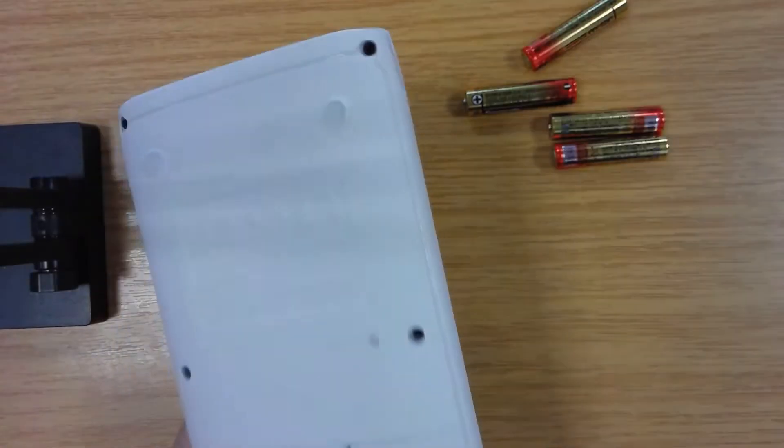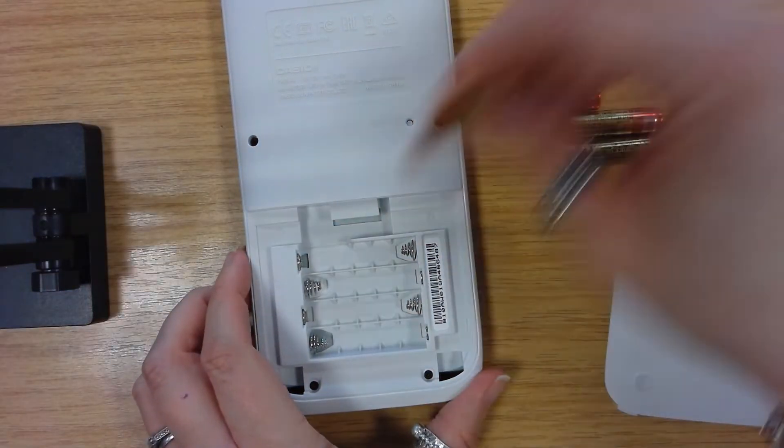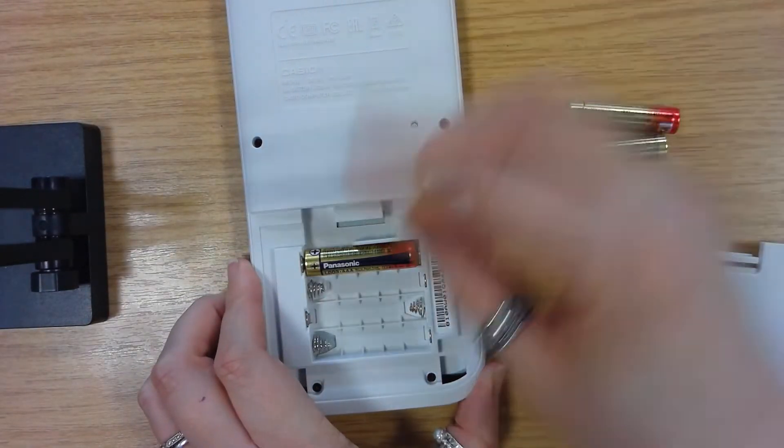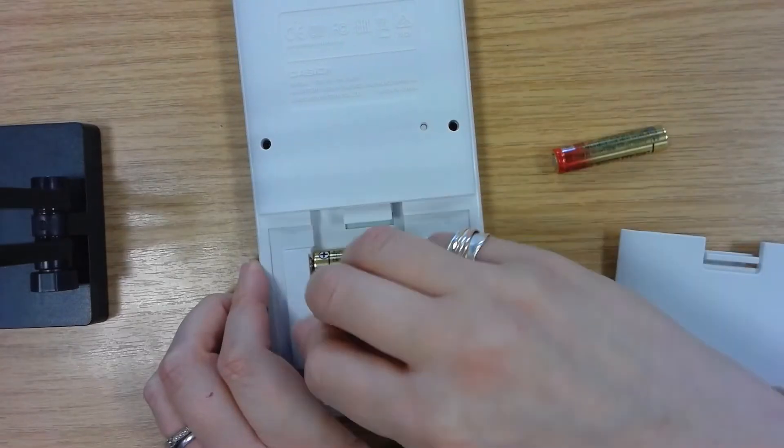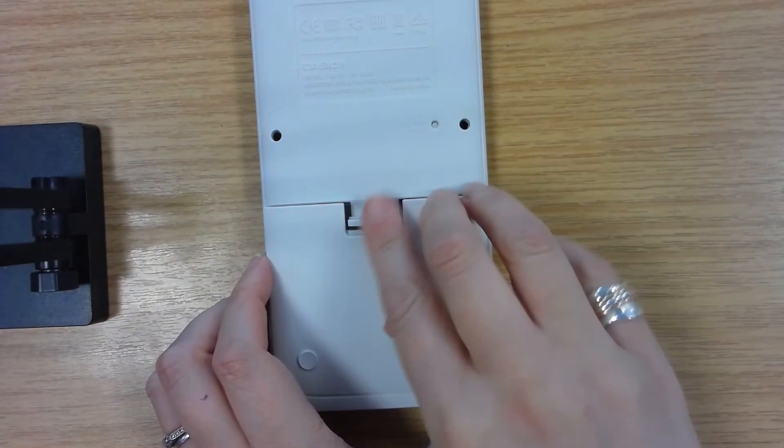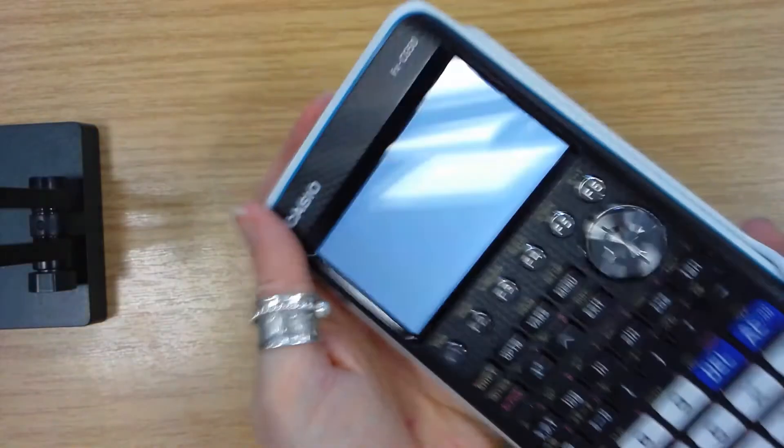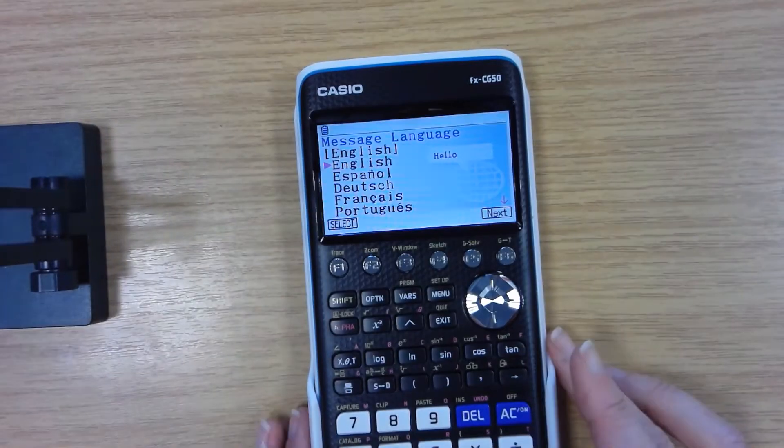So I'm going to put the back to one side and here at the rear of the calculator I can unclip to then put my four AAA batteries in. These are not rechargeable but you could put rechargeable ones in if you wanted, and then close it up. Slide it back into the back and then my calculator is turning on.